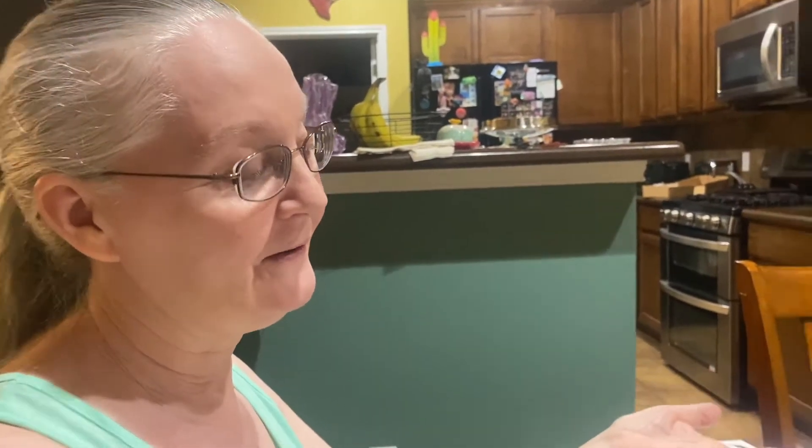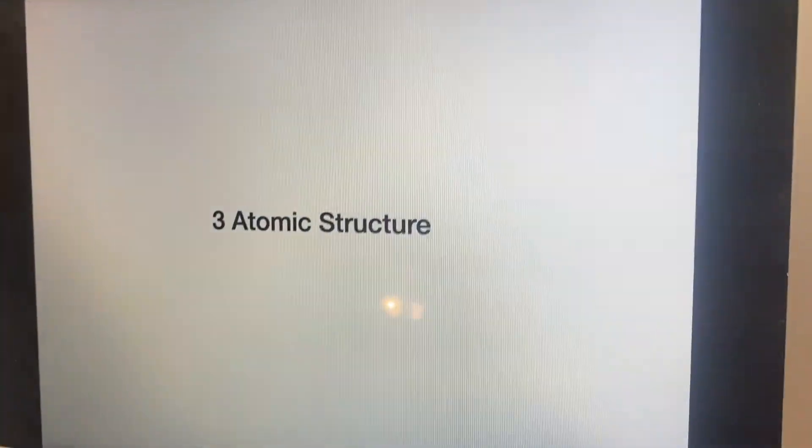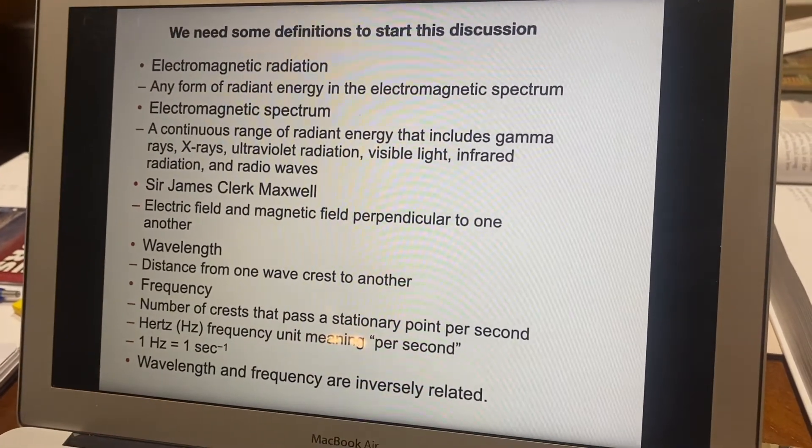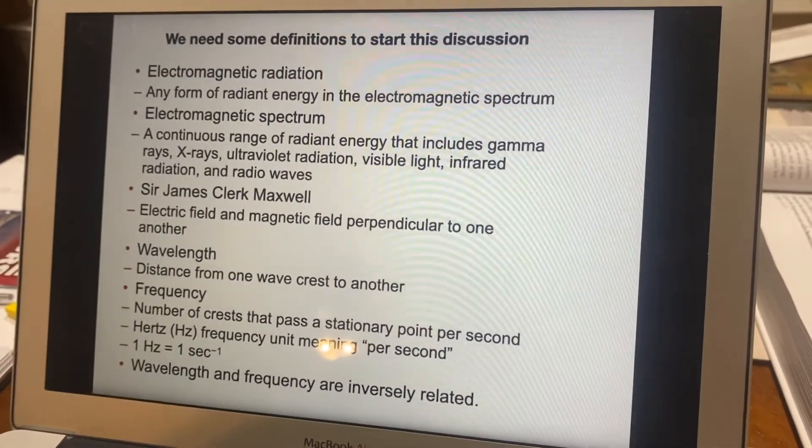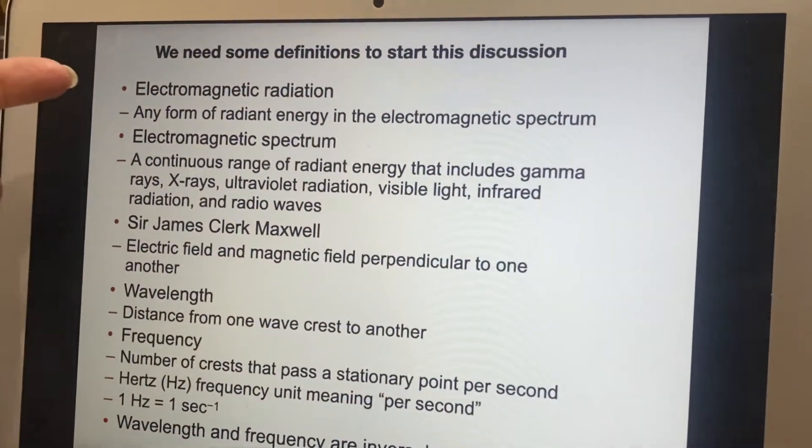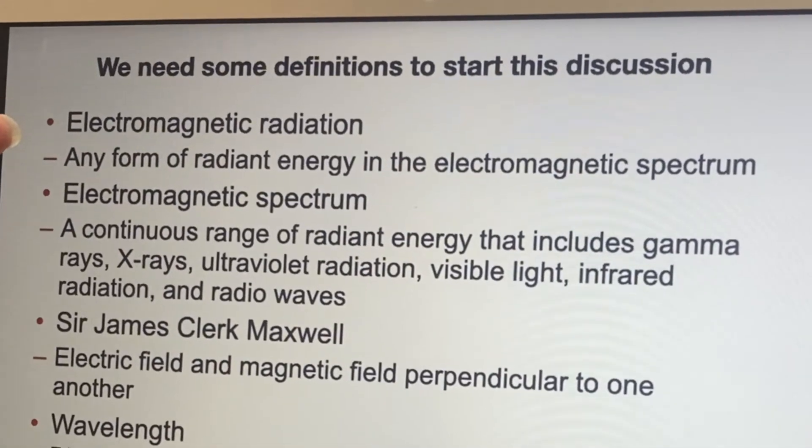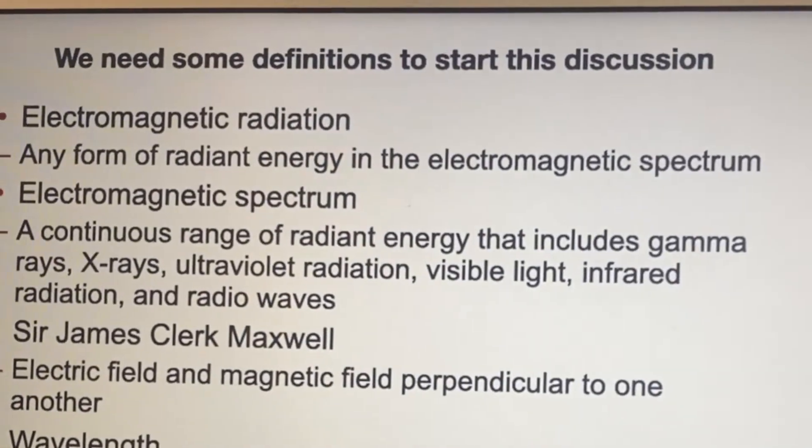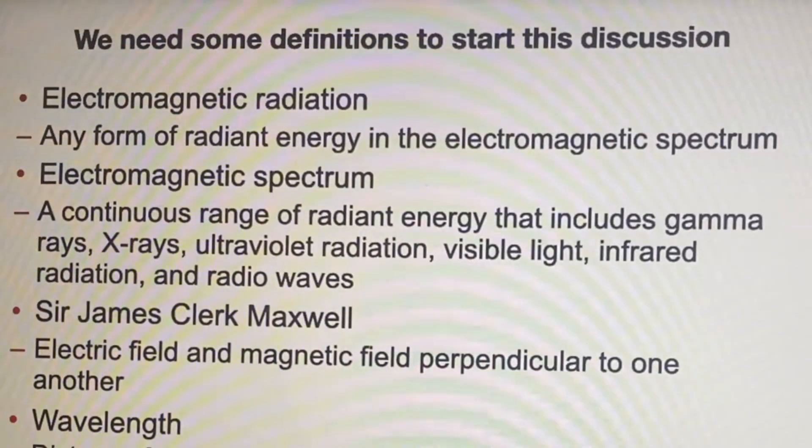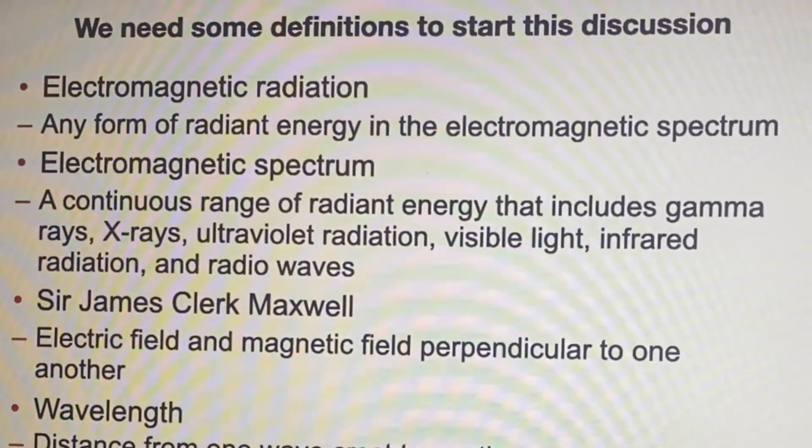Here we go with Chapter 3. Unfortunately, we have a whole page of definitions in order to start discussing this. We have to talk about electromagnetic radiation. That is going to be any form of radiant energy in the electromagnetic spectrum. Well, thank you very much. That's just so illuminating.